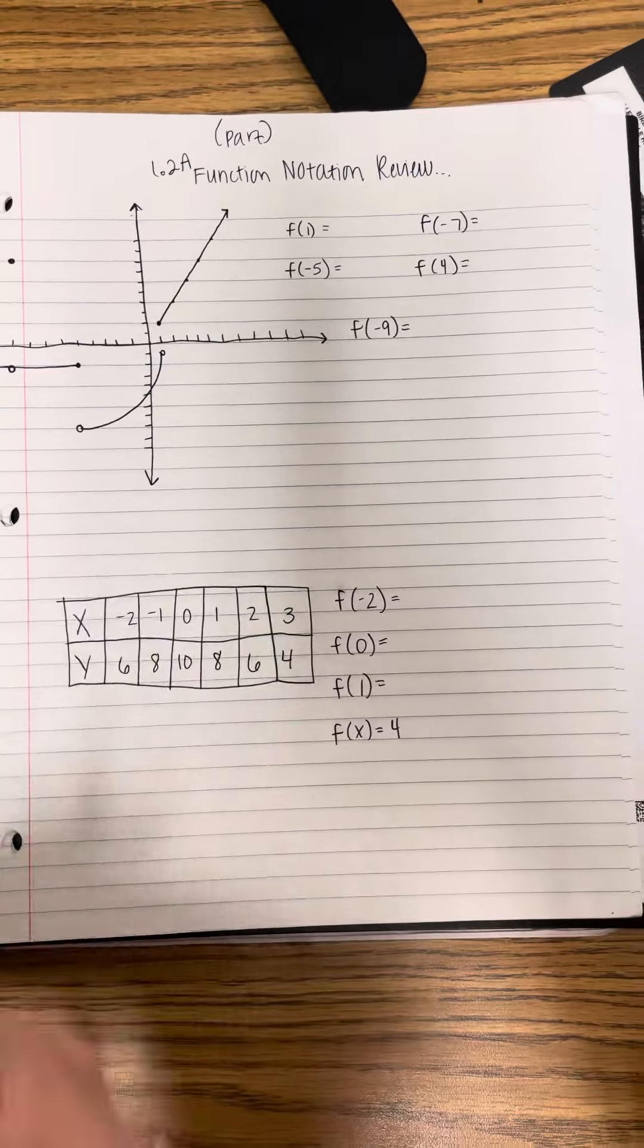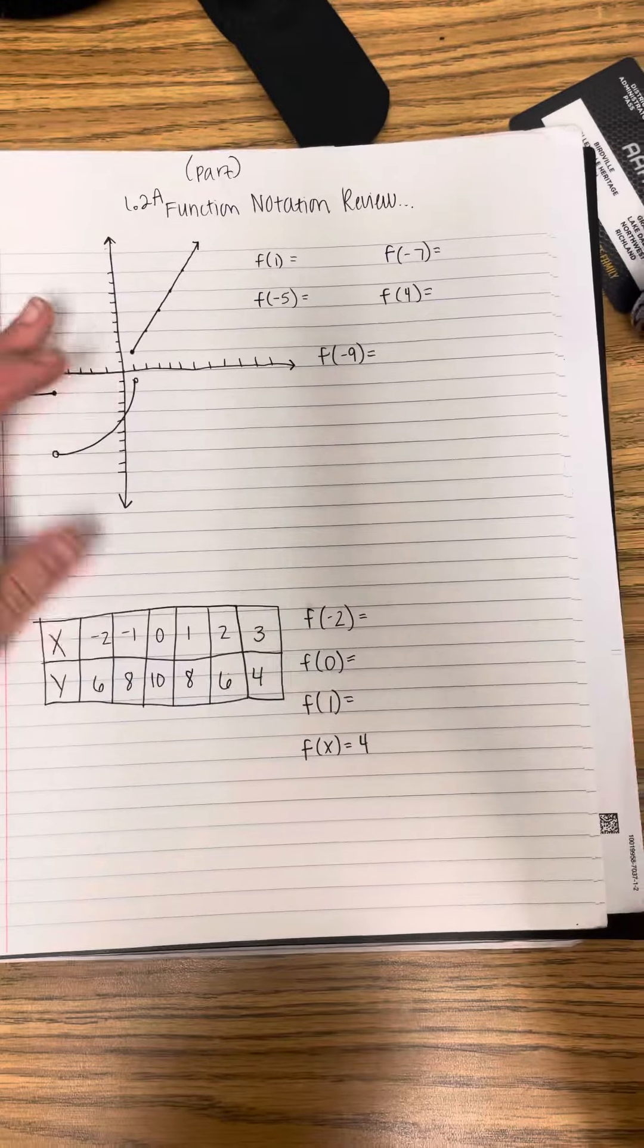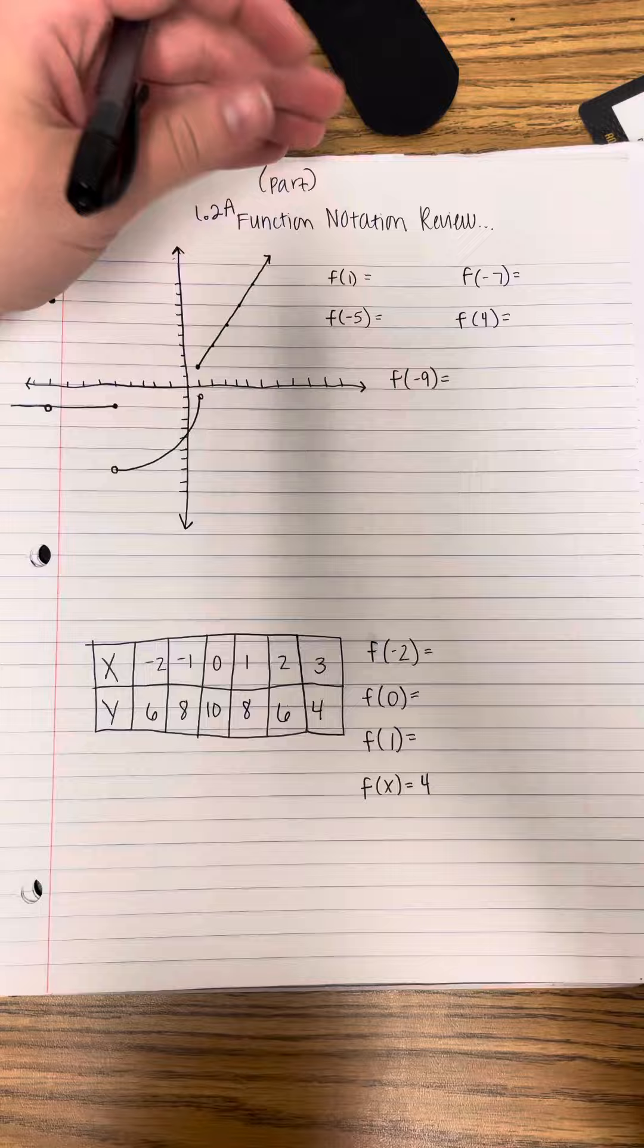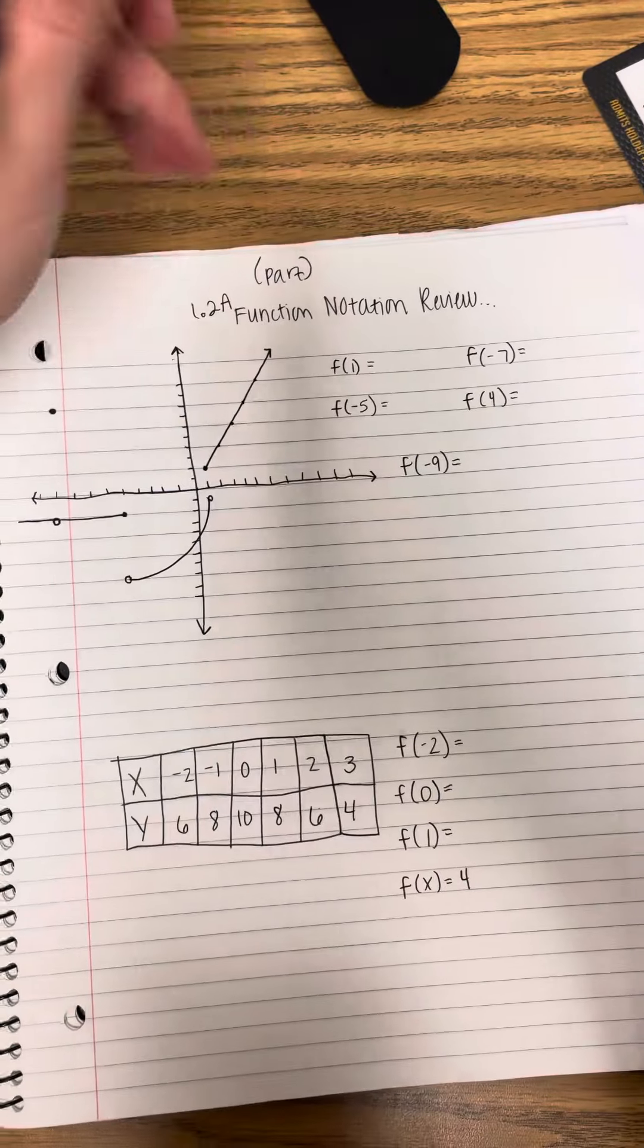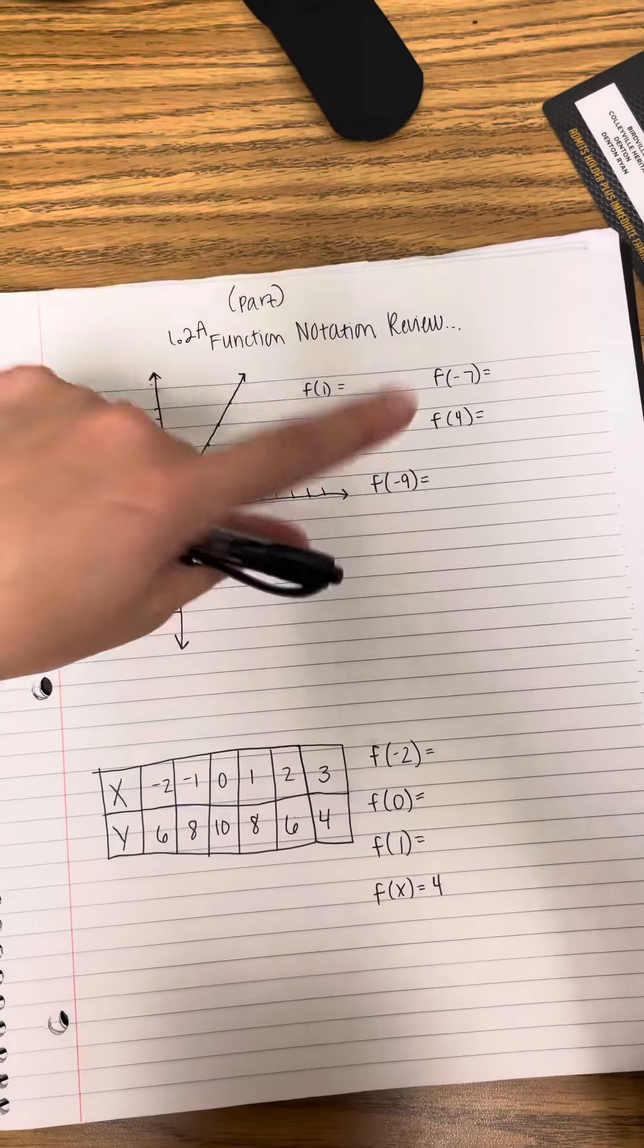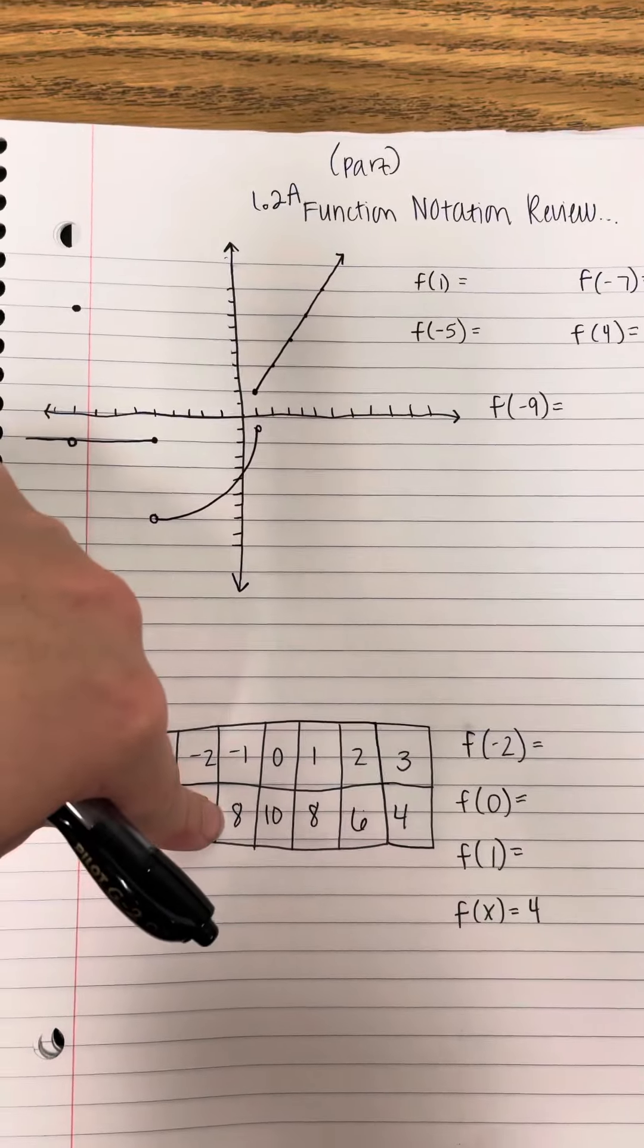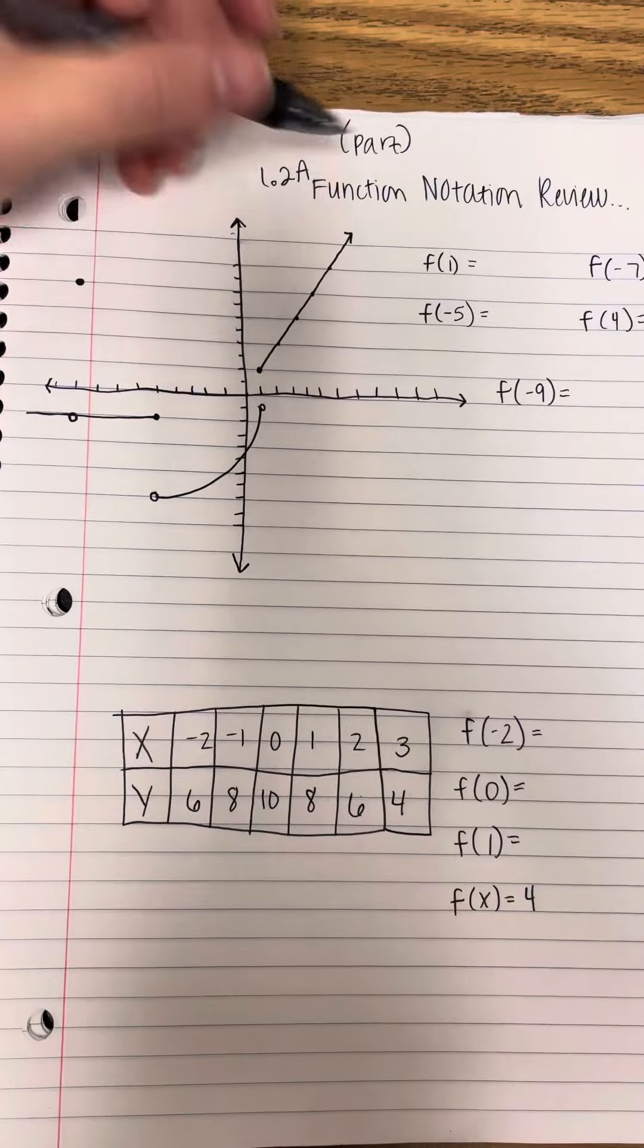So when it's just a variable that you're plugging into an equation, you can solve. But here you have to look. Every number that's in parentheses represents the x value, and basically it's asking if x is this number, what is y? So you should be able to tell that by looking at a graph or by looking at a table or by plugging it into an equation.